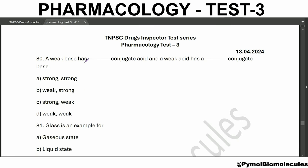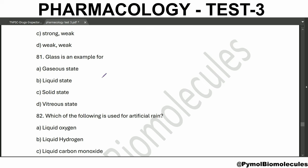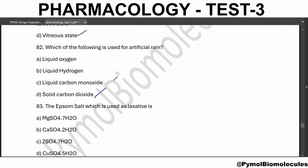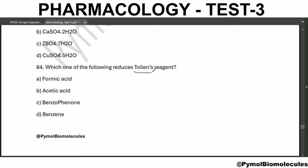A weak base has a strong conjugate acid, and a weak acid has a strong conjugate base. Glass is an example of a vitreous state. Which of the following is used for artificial rain? That is solid carbon dioxide, also called dry ice. Epsom salt used as a laxative is magnesium sulfate.